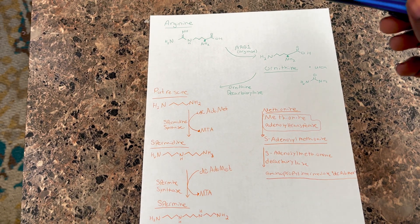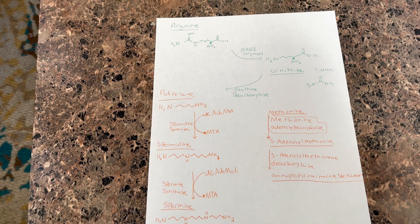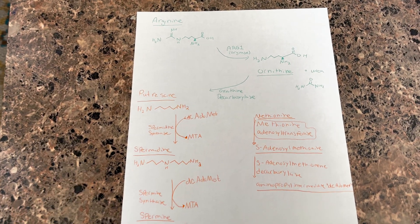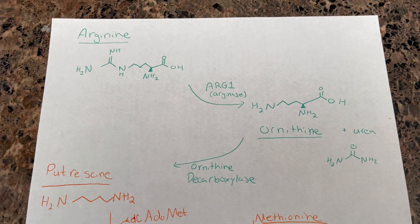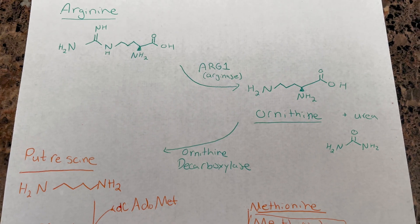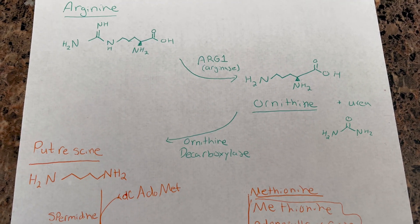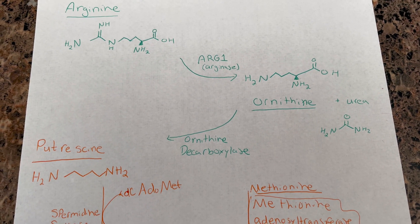To get there, we start with arginine, and then it is oxidized by arginase, and that makes a product of ornithine and urea. It can also make agmatine, but we're not going to cover that in this video.